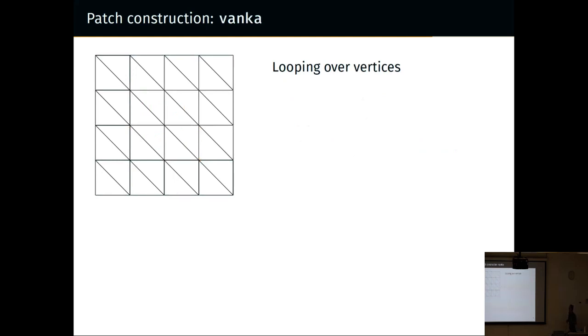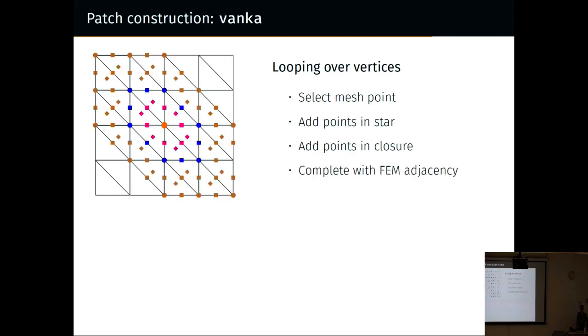We can do Vanka, so you can do monolithic multigrid smoothers. For P2-P1, I might want to loop over the vertices, select the mesh point, add the points in the star, add the points in the closure of the star, and then complete with finite element adjacency. This is why Vanka is a really expensive smoother, because in 2D for each vertex patch, I need to assemble over a patch of elements like this. In 3D, I can't draw 3D diagrams, but you can imagine what it might look like.